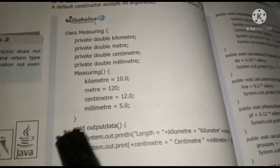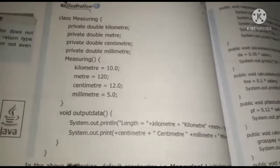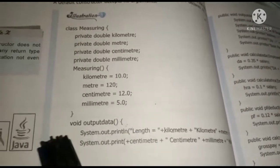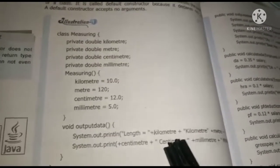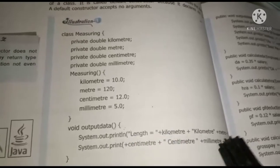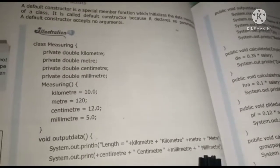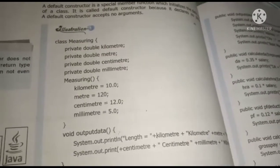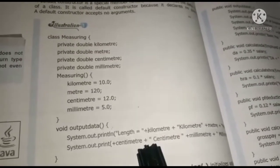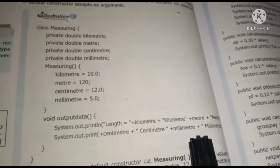We are making a method void output data. And we are calling the method with the system.out.println. Length equals to kilometer plus kilometer plus meter plus meter plus meter. Means this is the formula of length. Then plus centimeter plus centimeter plus millimeter plus millimeter plus millimeter.